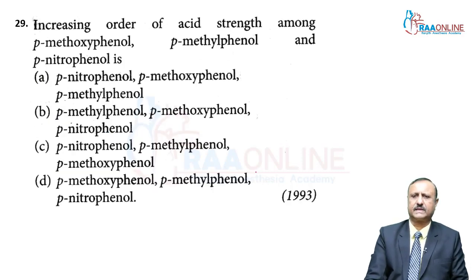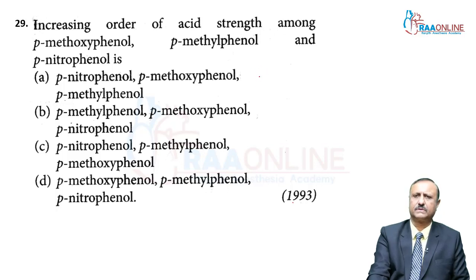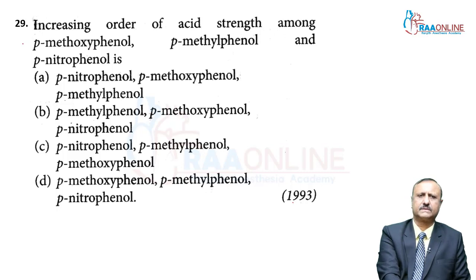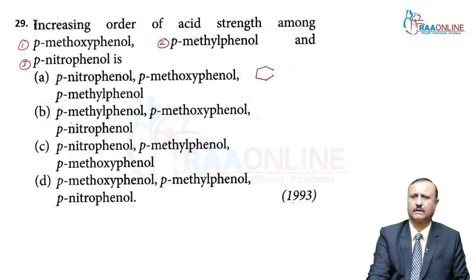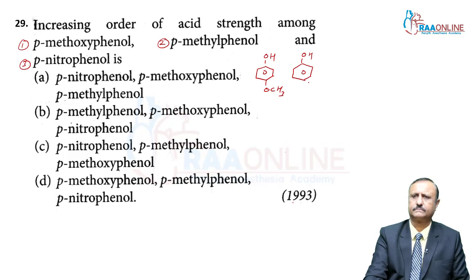Next: acid strength comparison involving phenol, para-methoxyphenol, and para-nitrophenol. Looking at three examples: phenol (reference), para-methoxyphenol (with –OCH₃ group), and para-nitrophenol (with –NO₂ group).